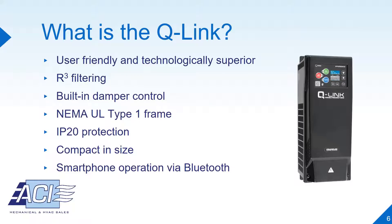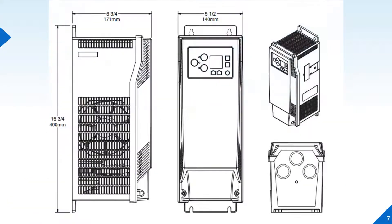What is the Q-Link? The Q-Link is a new and revolutionary variable frequency drive that is user-friendly and technologically superior. It has R-cubed filtering for harmonic mitigation and provides an array of inputs and outputs, including a built-in damper control. This product has NEMA UL Type 1 frame IP20 protection and is very compact in size. Finally, the feature that sets the Q-Link VFD apart from others is that you can control and support the VFD via a smartphone using the mobile app. This drawing shows the dimensions of this device for sizing reference. The Q-Link VFD has the smallest footprint on the market.